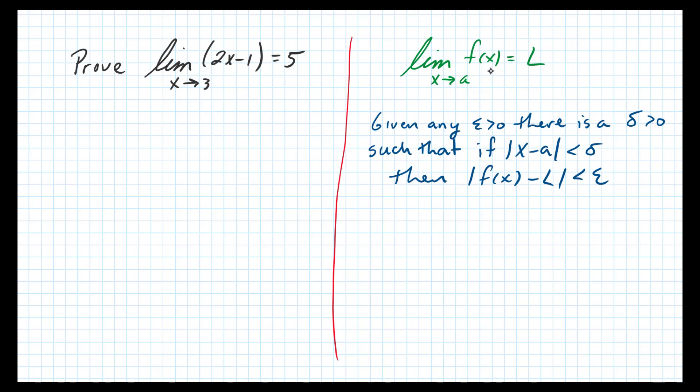So the limit as x approaches A of f(x) equals L means that given any epsilon greater than 0, there is a delta such that if x minus A is less than delta, then f(x) minus L is going to be less than epsilon.